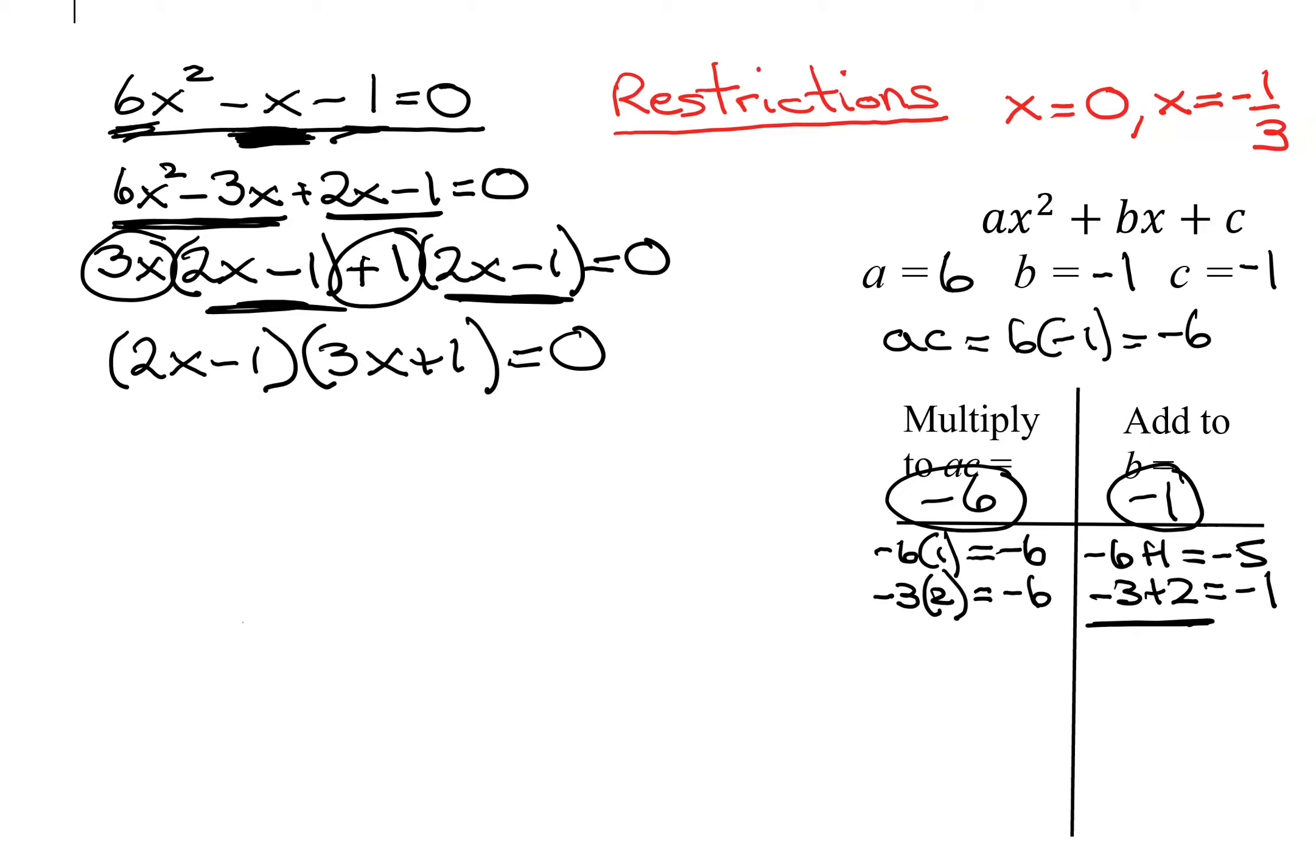Now, because I have 0 on one side, you set each factor equal to 0. You have two simple little linear equations. Add 1 to both sides. Divide both sides by 2. So I get x equals 1 half.